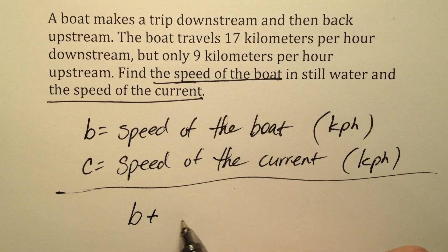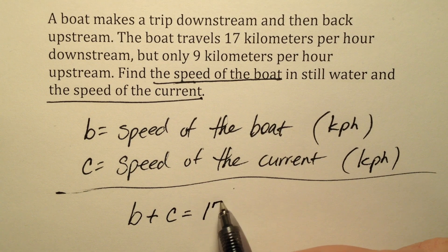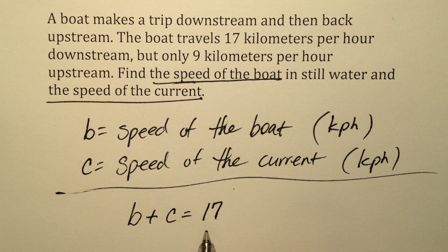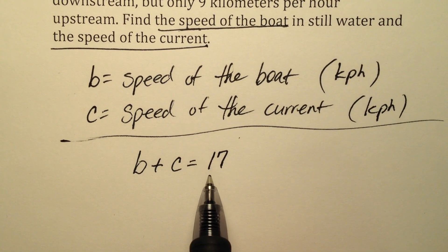So we're going to say the speed of the boat plus the speed of the current, because he's going downstream, equals 17 kilometers per hour.